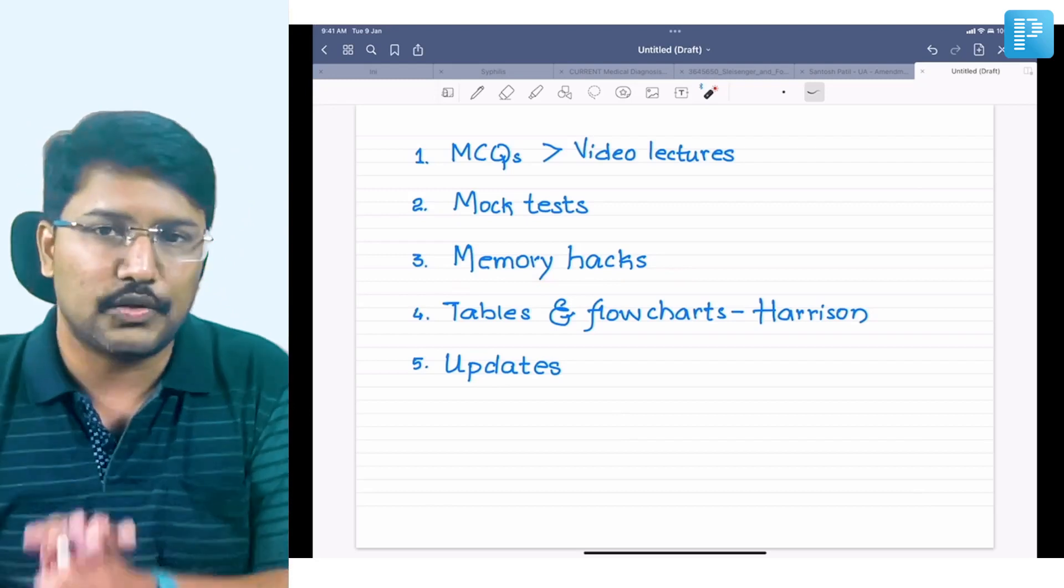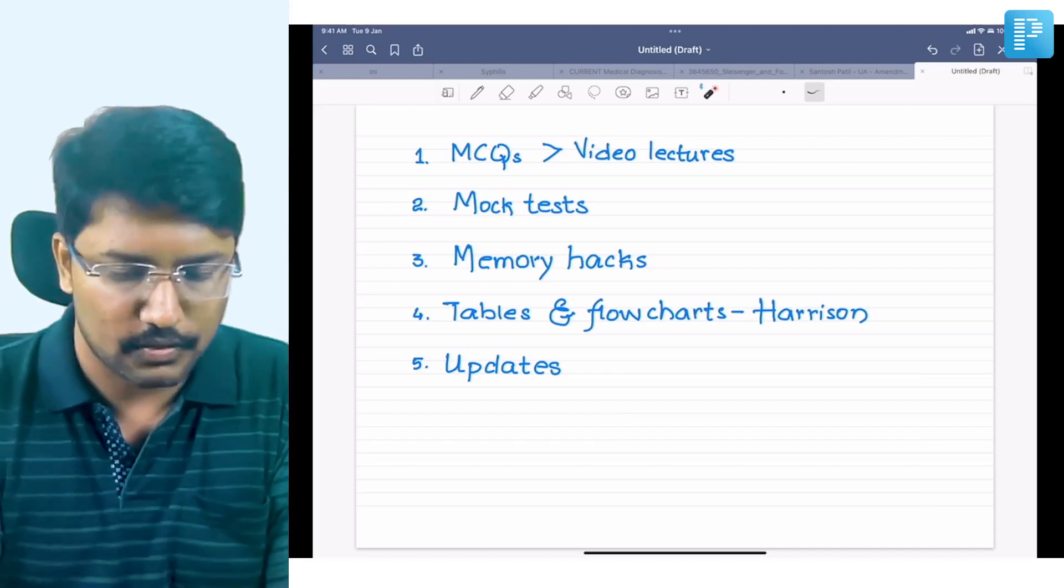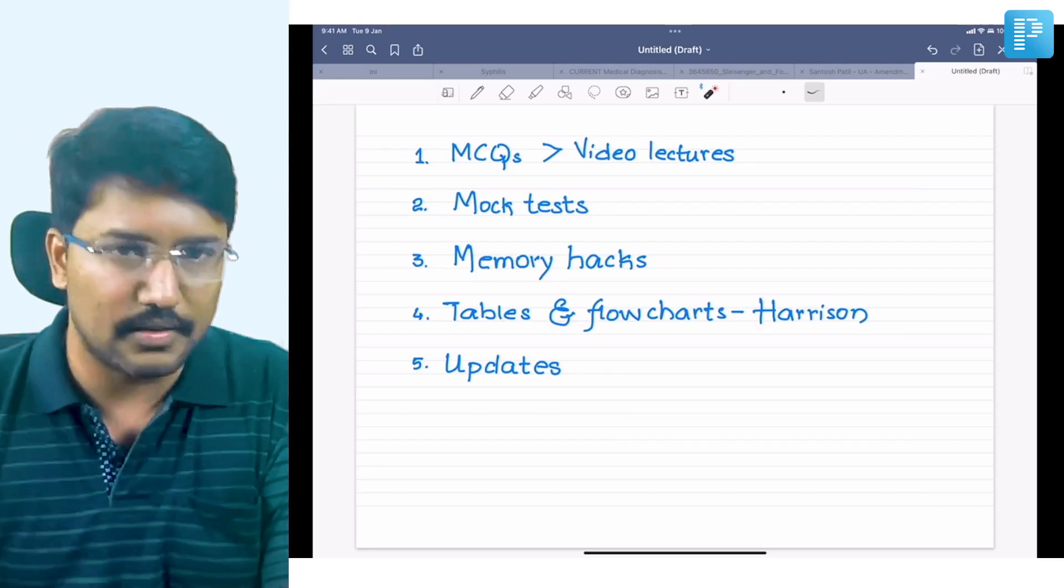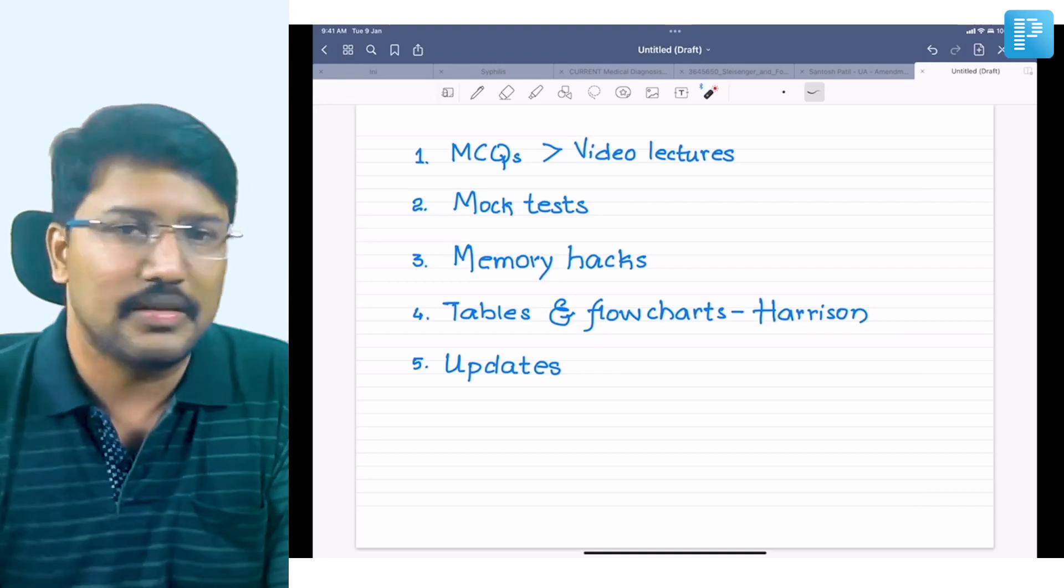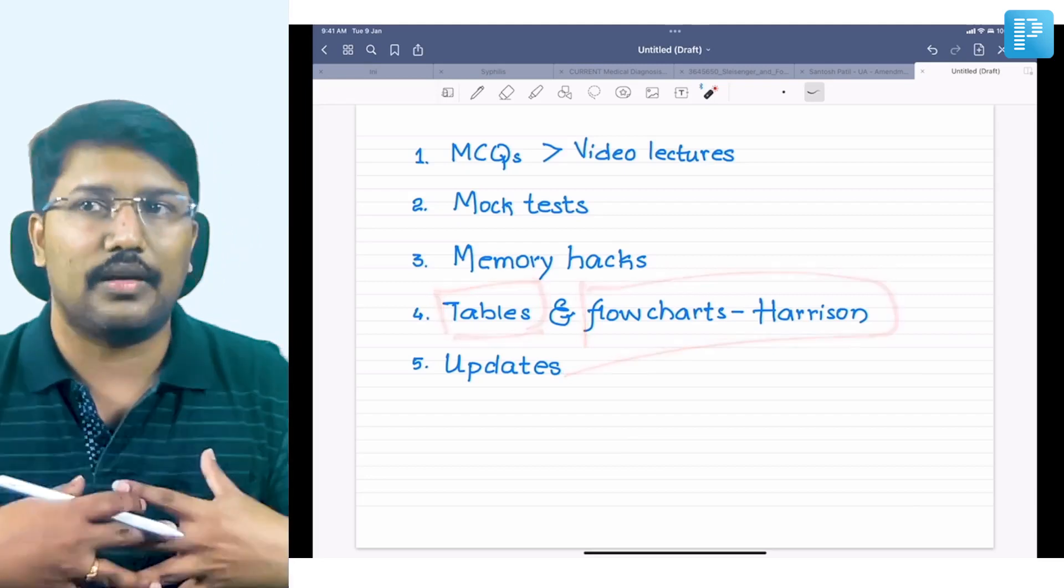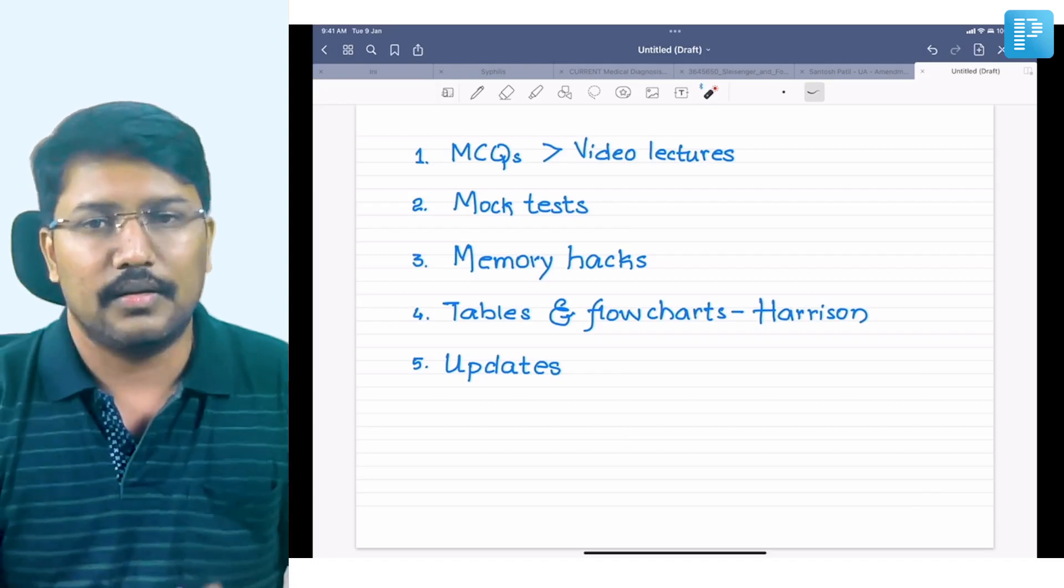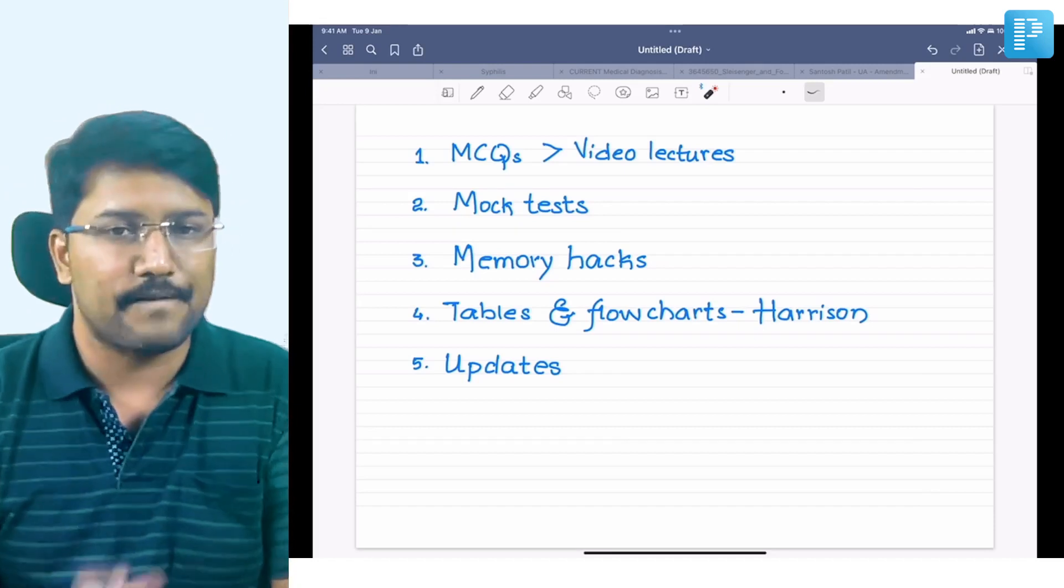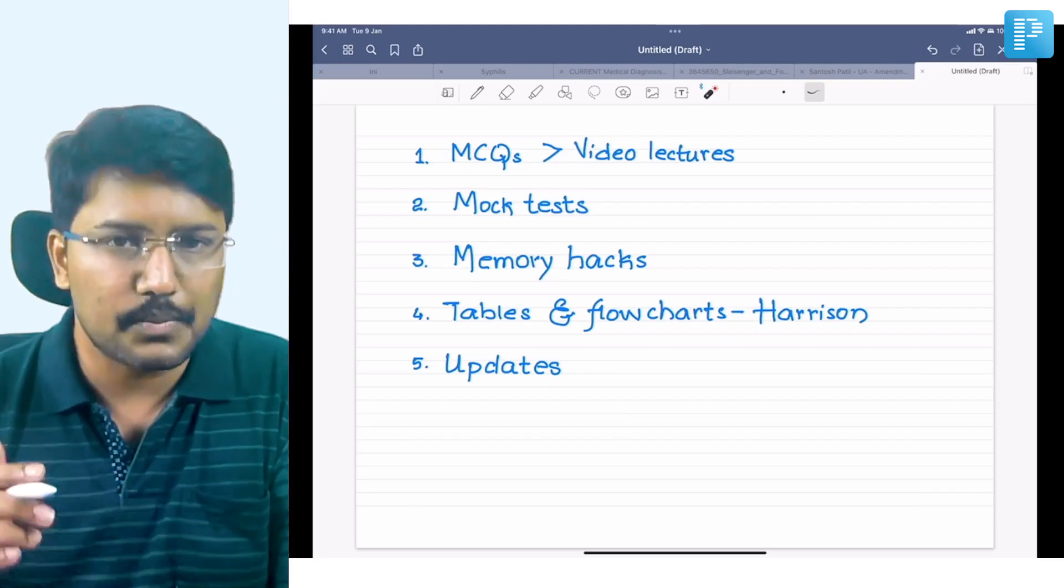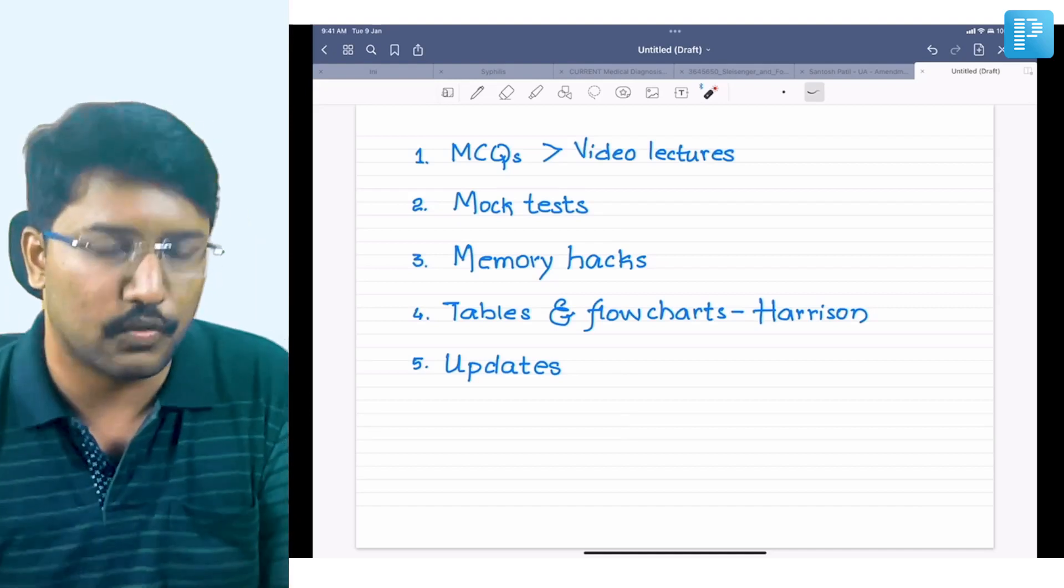Fourth—I should be placing it on top, but because we're talking about the approach rather than the absolute value of these individual approaches—this is very important. Tables and flowcharts of Harrison. I keep telling this in every strategy video because when MCQs are constructed from a table, that makes it very easy for the examiner to construct MCQs. Focus on all the tables of Harrison and all the flowcharts. After you've completed preparing a particular system—say neurology—you went through video lectures, solved MCQs, glanced through notes.